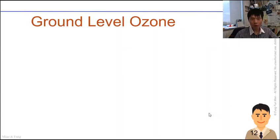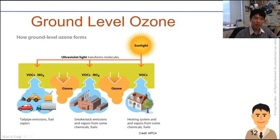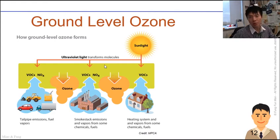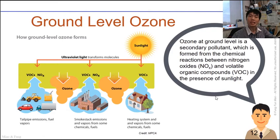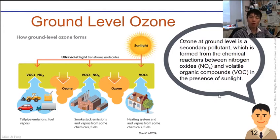Let's continue with ground-level ozone under the ozone hole topic. I'd like to explain how ground-level ozone is formed. This ground-level ozone is the 'bad' ozone that we could potentially inhale into the respiratory system. There are a few mechanisms by which O3 can be formed, and most importantly, a prerequisite is that we need sunlight — or rather ultraviolet rays — for ozone to be formed as a secondary pollutant.